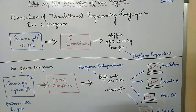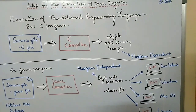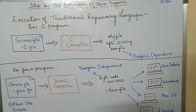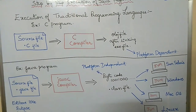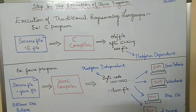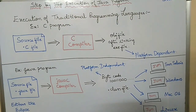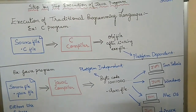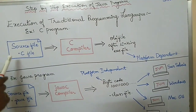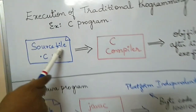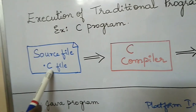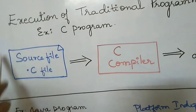Hello friends, welcome back. Today we'll see the step-by-step execution of a Java program. To get into these details, let us first see how traditional programming languages get executed. Here I have taken the example of a C program. The program that you write is called the source file, which is saved with the dot-c extension.